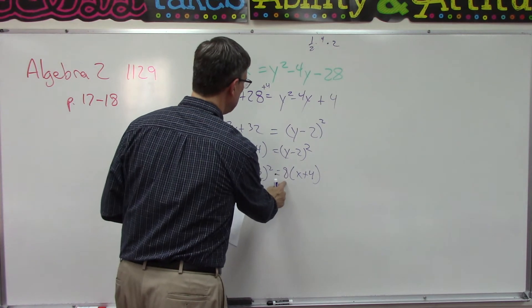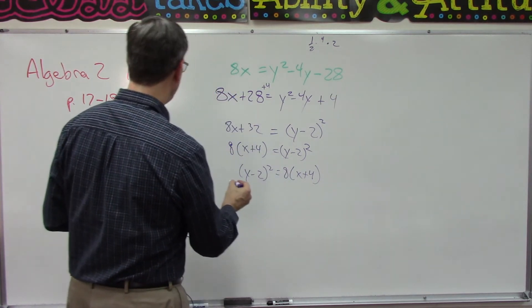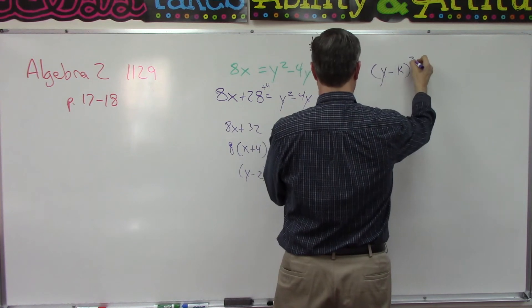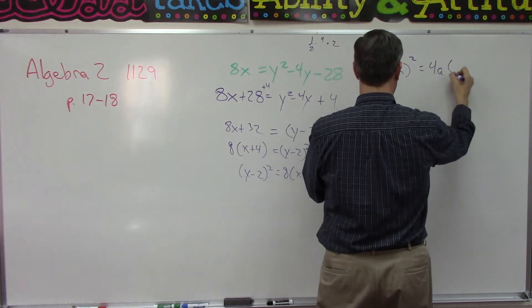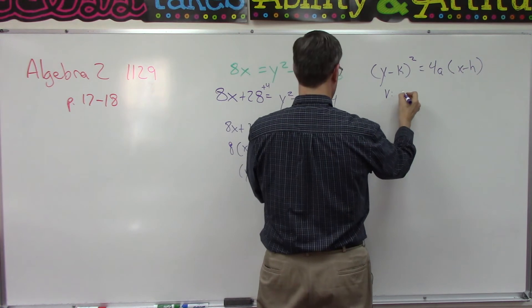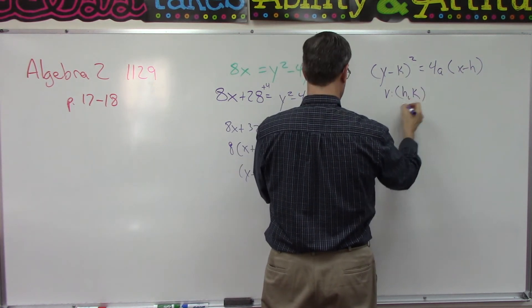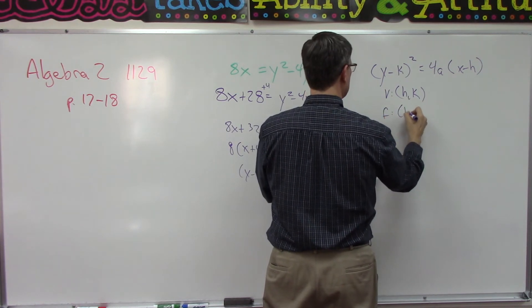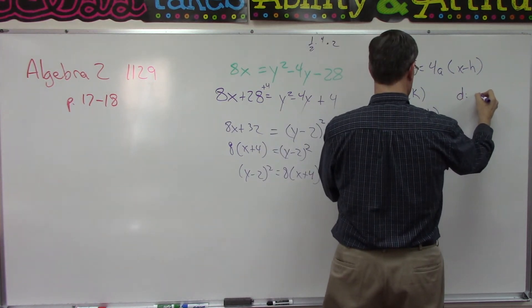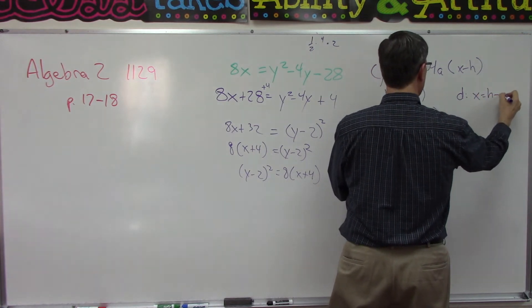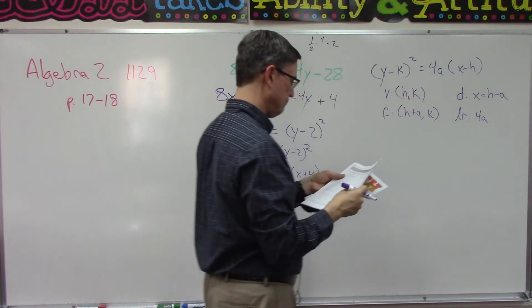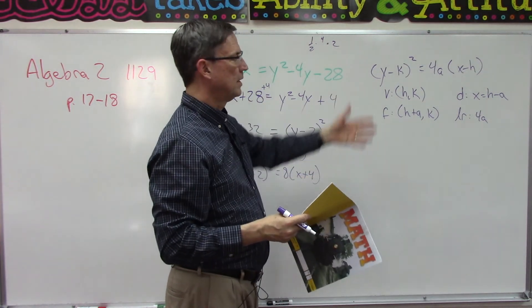and we have a positive term here. This 8 is a positive term. So that means our template is—I'm going to write—vertex will be the point (h, k), the focus is (h + a, k), the directrix is x equals h minus a, and then the latus rectum is 4a. All right, so that again, I hope you're not